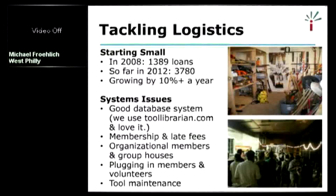One issue we had to face is organizational members and group houses. In West Philadelphia there are a number of group houses where eight or more unrelated adults live in the same house. They've always wanted to know if they can have one house membership. We've been consistent that each individual member must join the tool library. If people push back, we say it's 20 bucks minimum a year, and folks generally understand that their membership goes to purchase new tools and keep the place open.